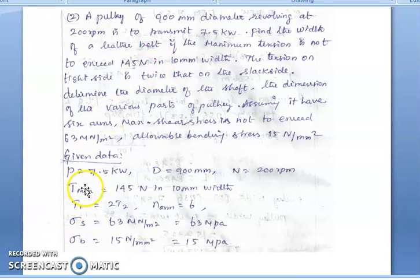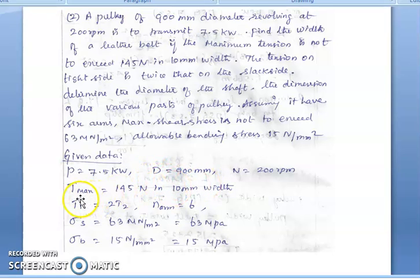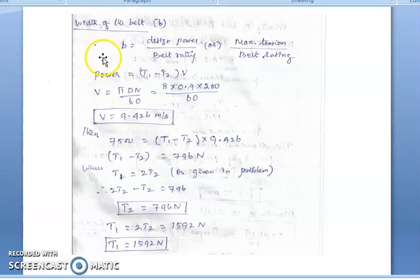Given data: power = 7.5 kW, driven pulley diameter D = 900 mm, speed N = 200 rpm. Maximum tension = 145 N per 10 mm width, T1 = 2·T2, number of arms = 6, shear stress = 63 MPa, bending stress = 50 N/mm².